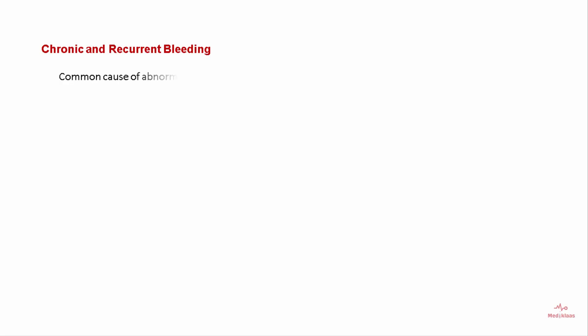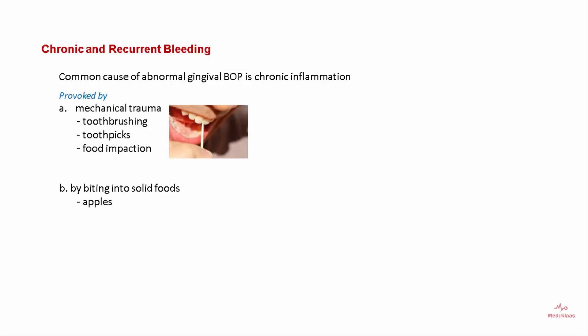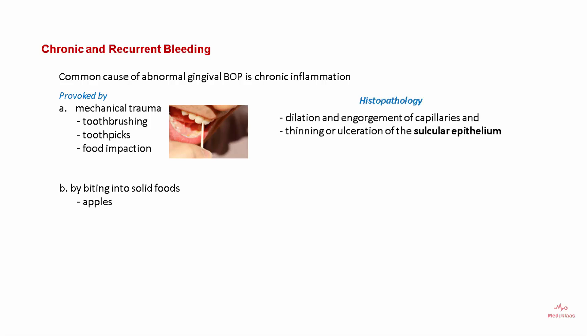Bleeding due to local factors is generally chronic and recurrent. A common cause of abnormal gingival bleeding on probing is chronic inflammation. It can be provoked by mechanical trauma like tooth brushing, toothpick use, and food impaction, or by biting on solid foods like apples. Histopathologically, there is dilation and engorgement of capillaries and thinning or ulceration of the sulcular epithelium, so the capillaries become enlarged in size and are closer to the surface.